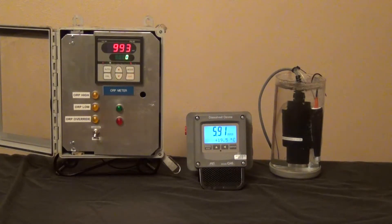I think we finally found the point at which the dissolved ozone level will stop increasing. We found almost 6 parts per million of dissolved ozone and our ORP value is about 993. The temperature of the water is about 19.5 degrees Celsius.